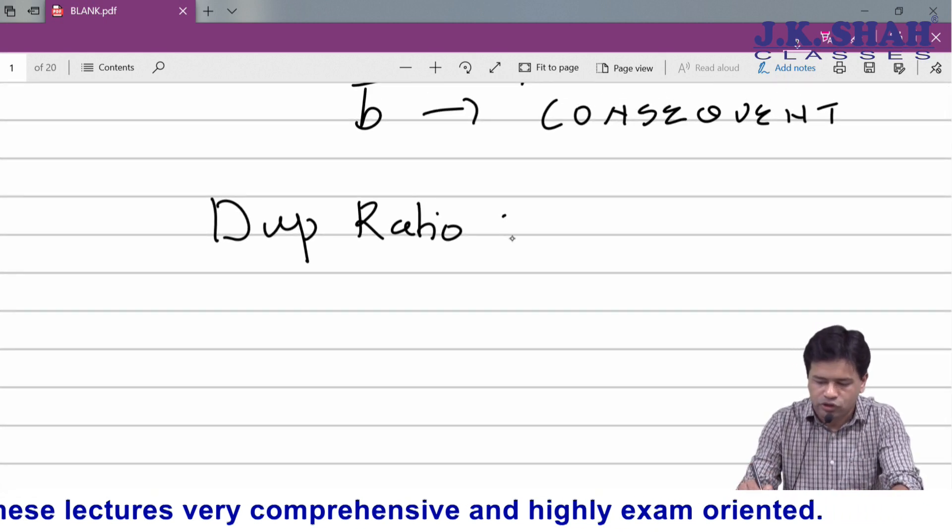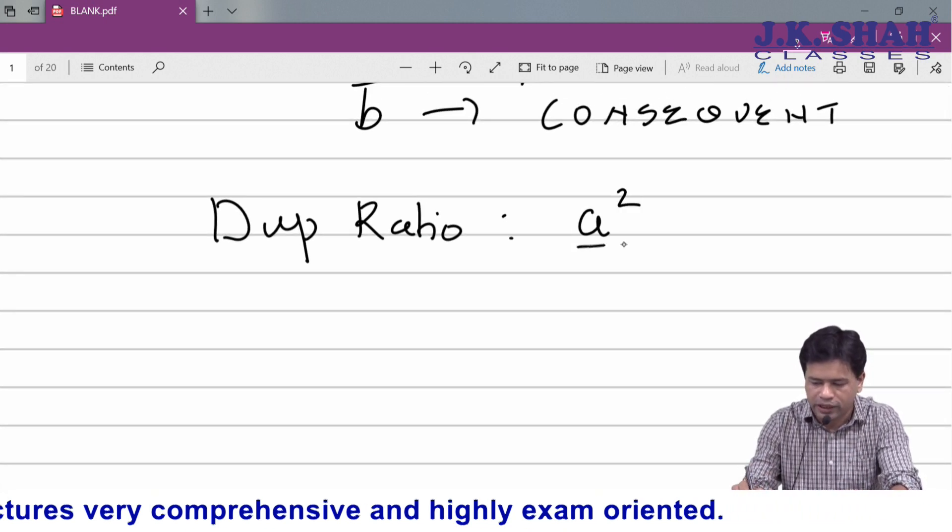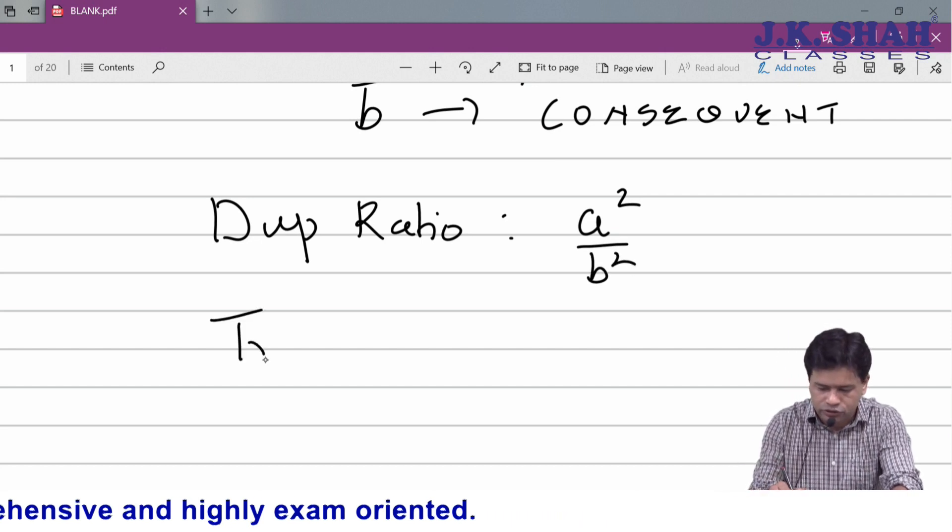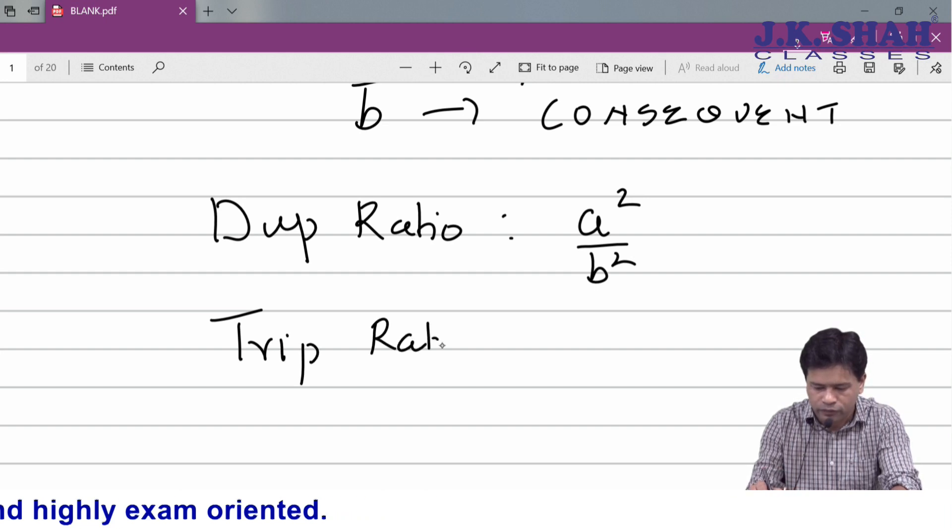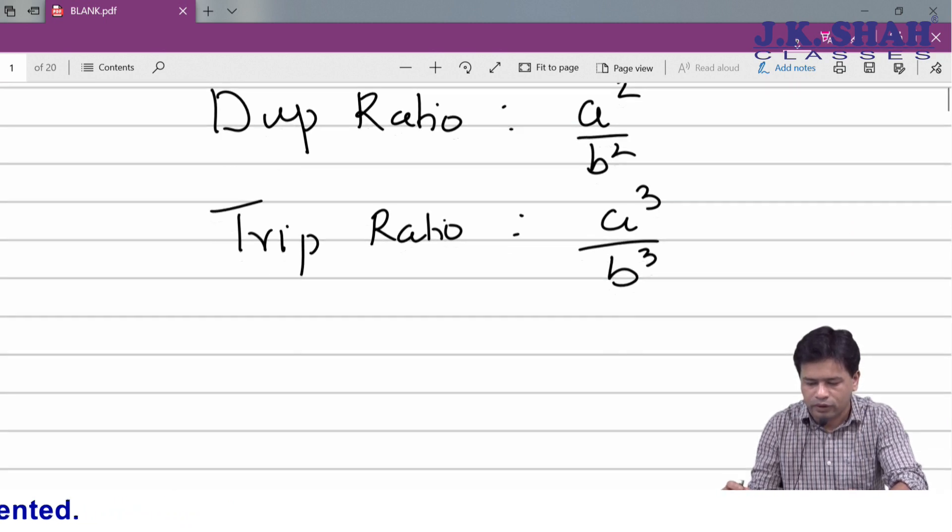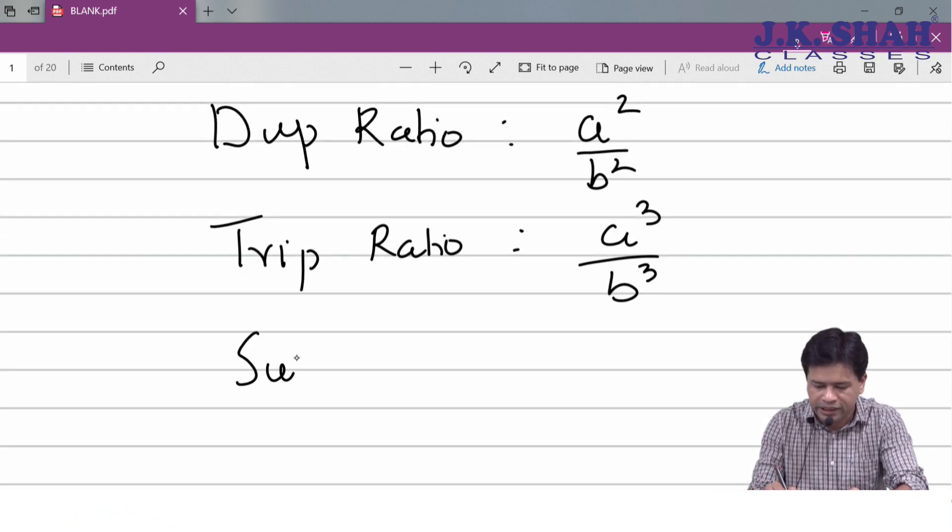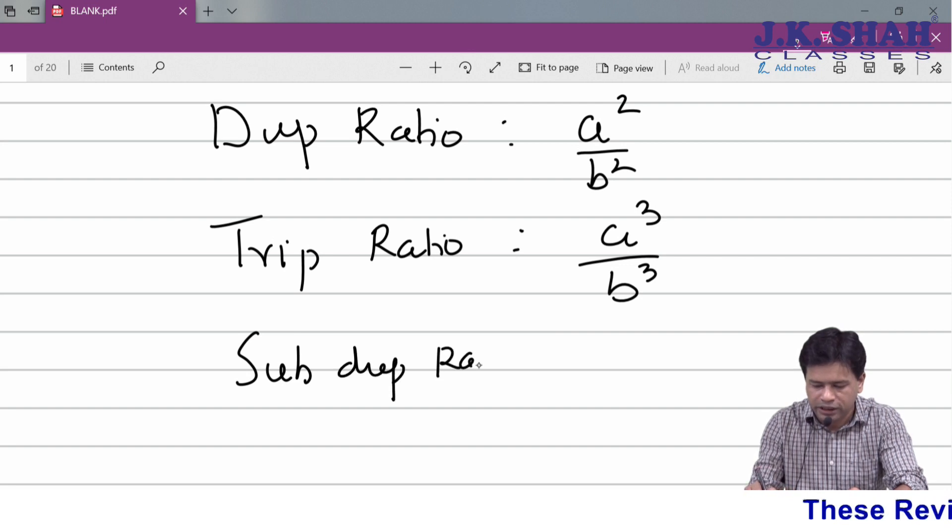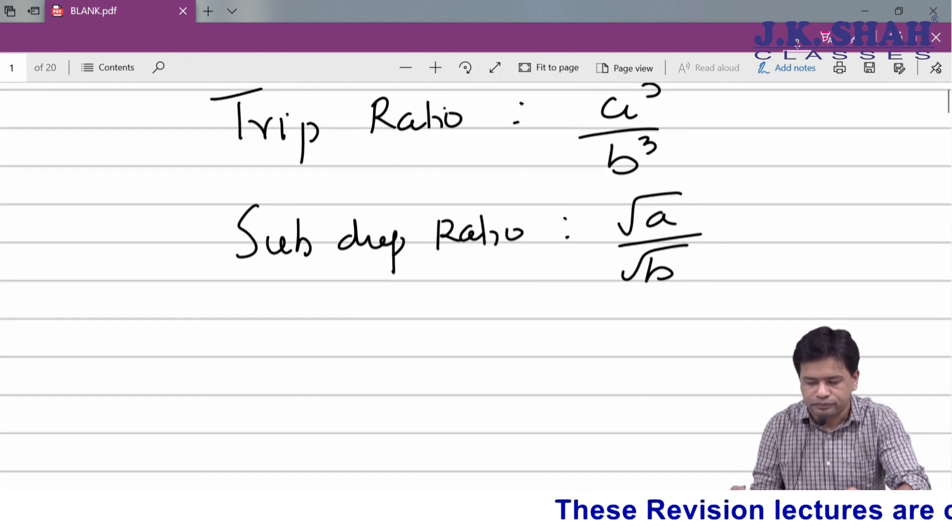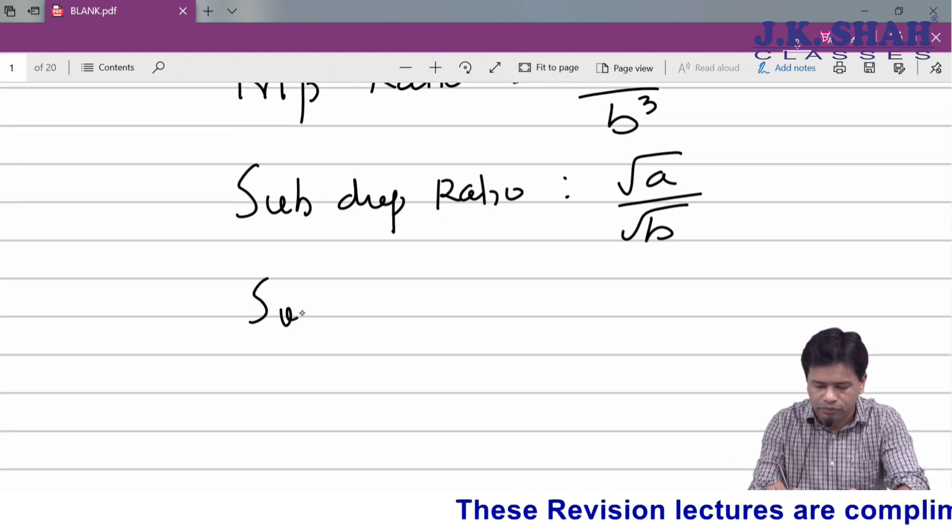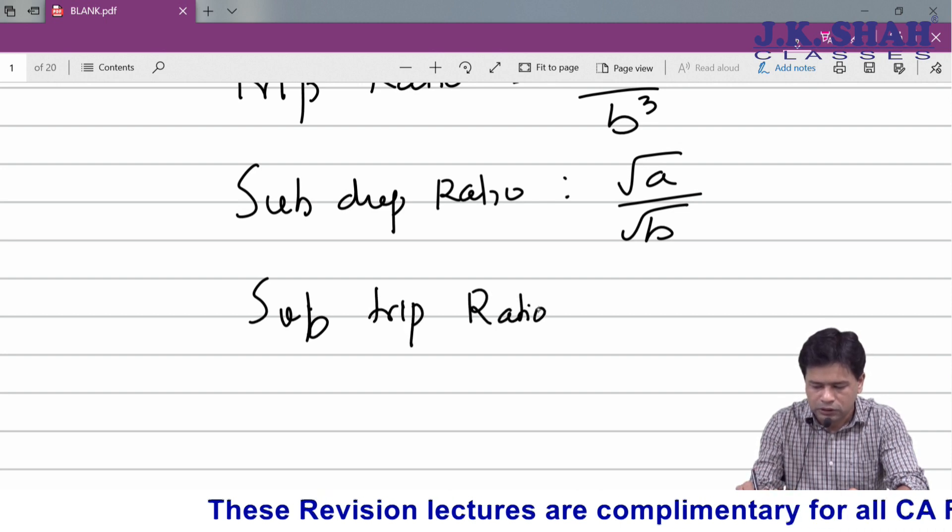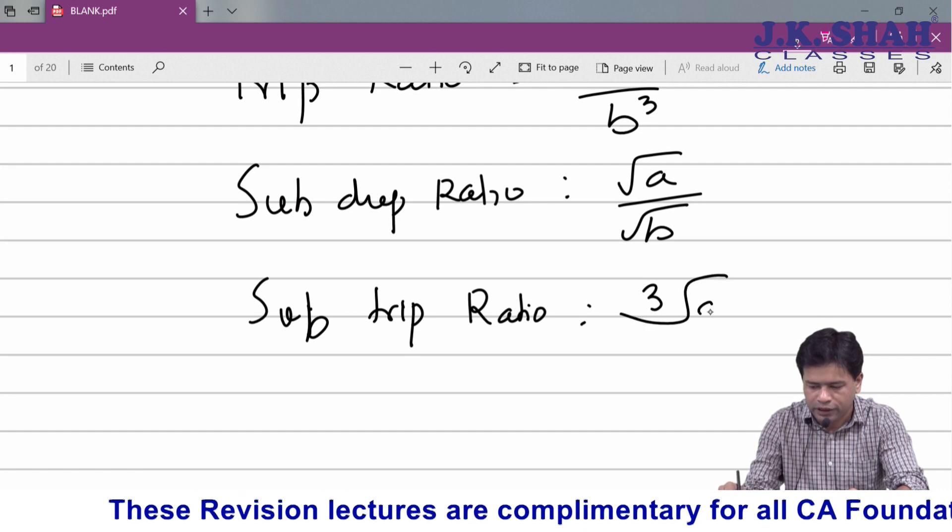Duplicate ratio means a squared upon b squared, or square of a upon b. Triplicate ratio means a cubed upon b cubed.